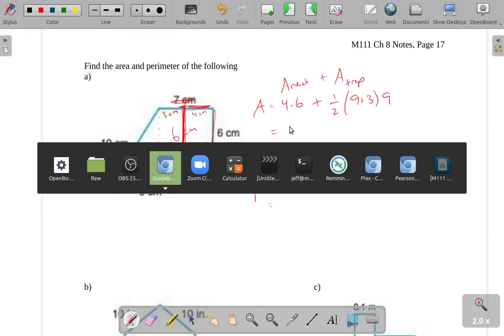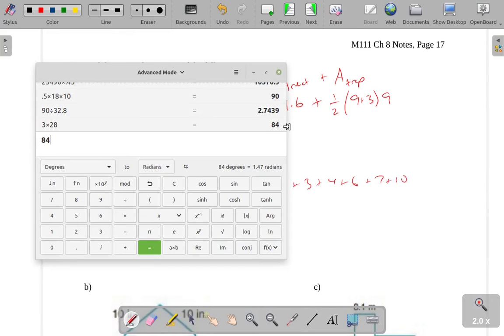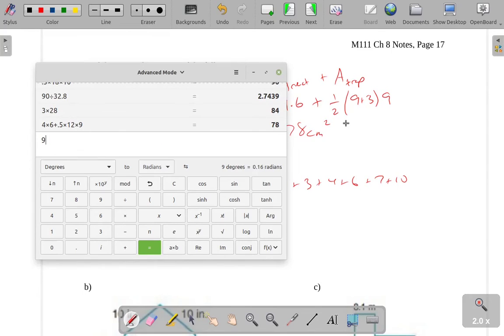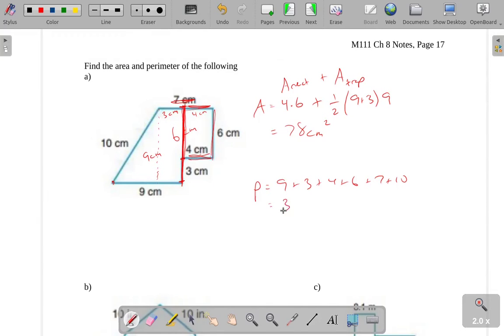Okay, let's actually plug this stuff into the calculator and see what we get. We get 4 times 6 plus 0.5 times 12 times 9, which gives me a total of 78. And this is all in centimeters, so the area will be in square centimeters. We could also do 9 plus 3, 4, 6, 7, and 10. Add all those together, that would give me a total perimeter of 39 centimeters.